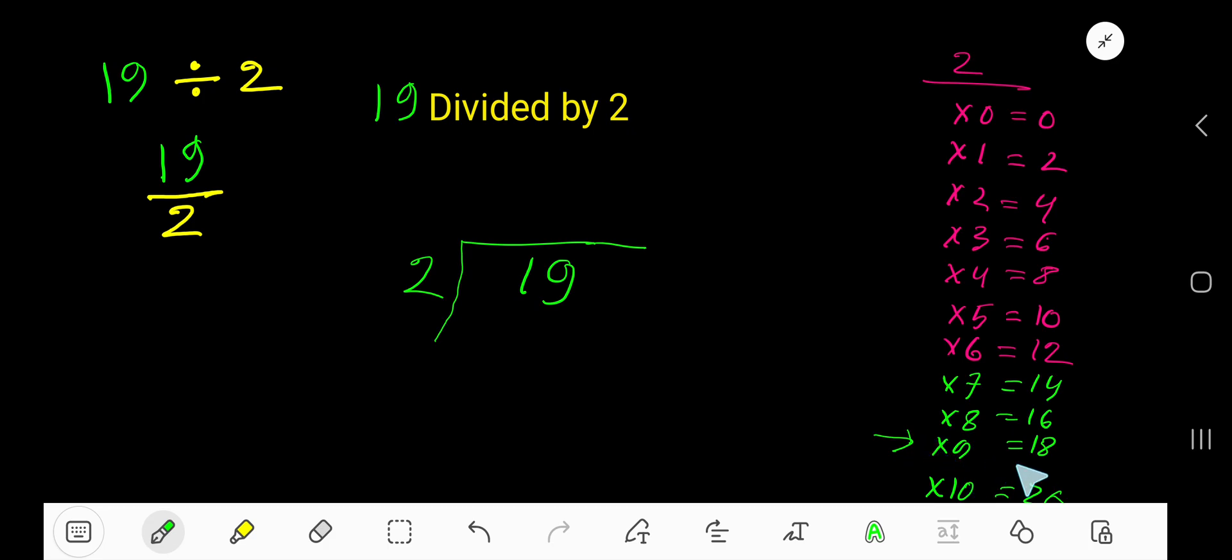2 times 9 equals 18. Subtract, your remainder is 1. And so you can write the answer like this: 9 remainder 1.